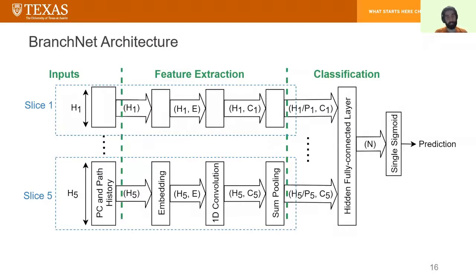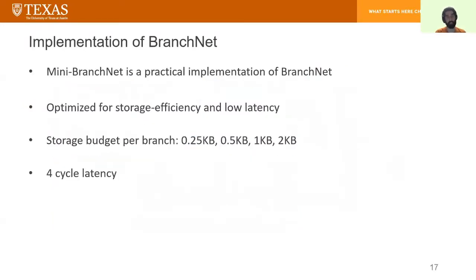Now, BranchNet architecture is actually more complex than the example I showed, but you could read the paper for more details. But one thing I want to highlight here before moving on is that what I refer to as the BranchNet architecture is an abstract software model. To get to a practical branch predictor, we need the hardware implementation of the same architecture. I refer to the hardware implementation of BranchNet as Mini BranchNet. Mini BranchNet is optimized for storage efficiency and low latency. And it has certain knobs that you could adjust to have different storage budgets per branch. And it has a four cycle latency.